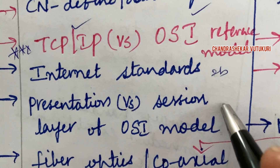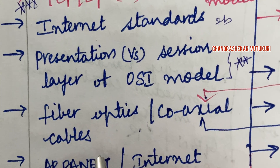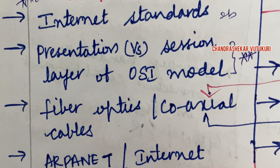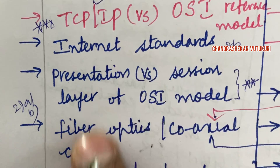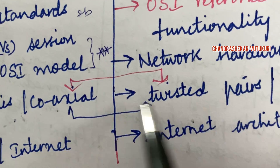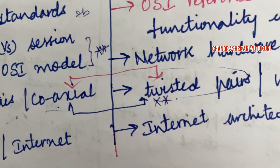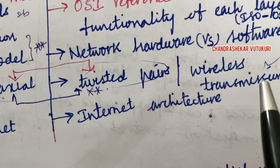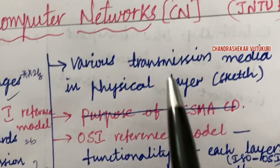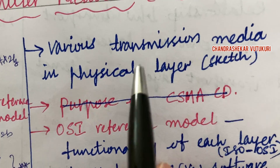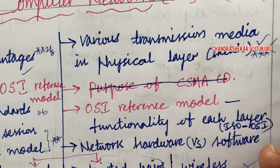Presentation versus Session layer of the OSI model — the differences — is also said to be a topmost question. Fiber optics, ARPANET, and the internet may be a 2A and 2B along with a 1A question. Coaxial versus twisted pairs along with a neat sketch is said to be a topmost question. Wireless transmission and internet architecture along with a neat sketch — you are supposed to work out various transmission media in the physical layer, which is a gunshot question that is repeatedly asked.